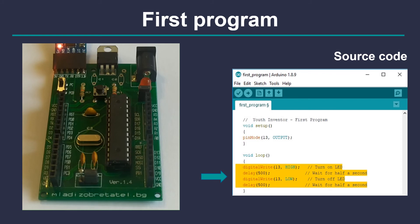In short: turn on the LED, wait, off, wait, and do it again and again. If we want to change how quickly the LED blinks, we can change the number in the bracket after the delay function. For example, 1000 equals one second.